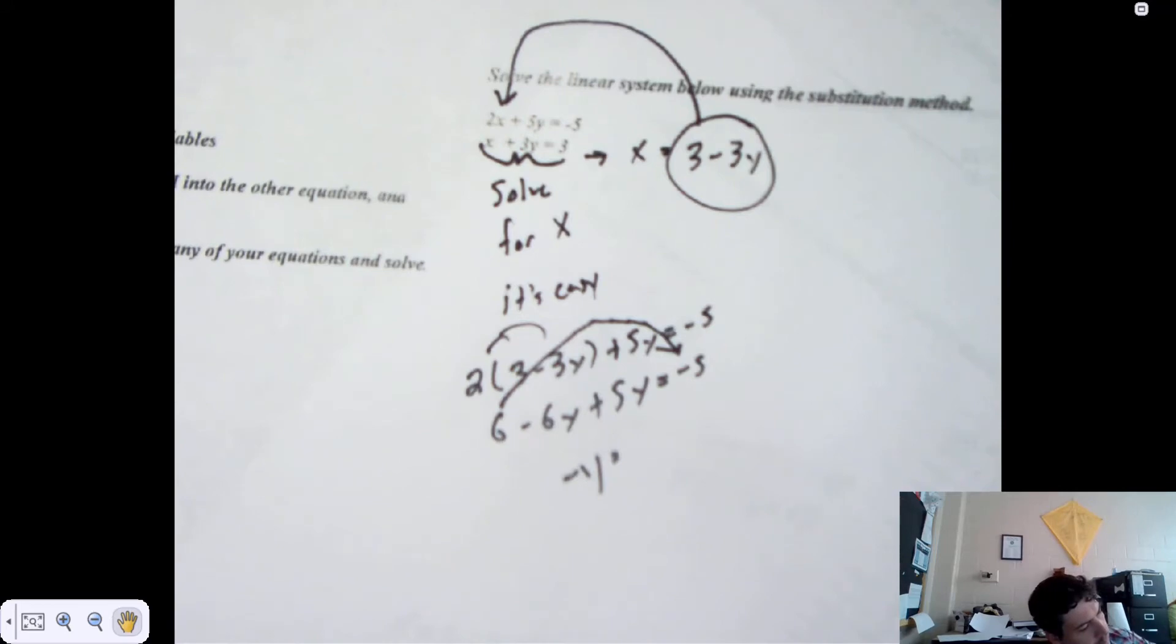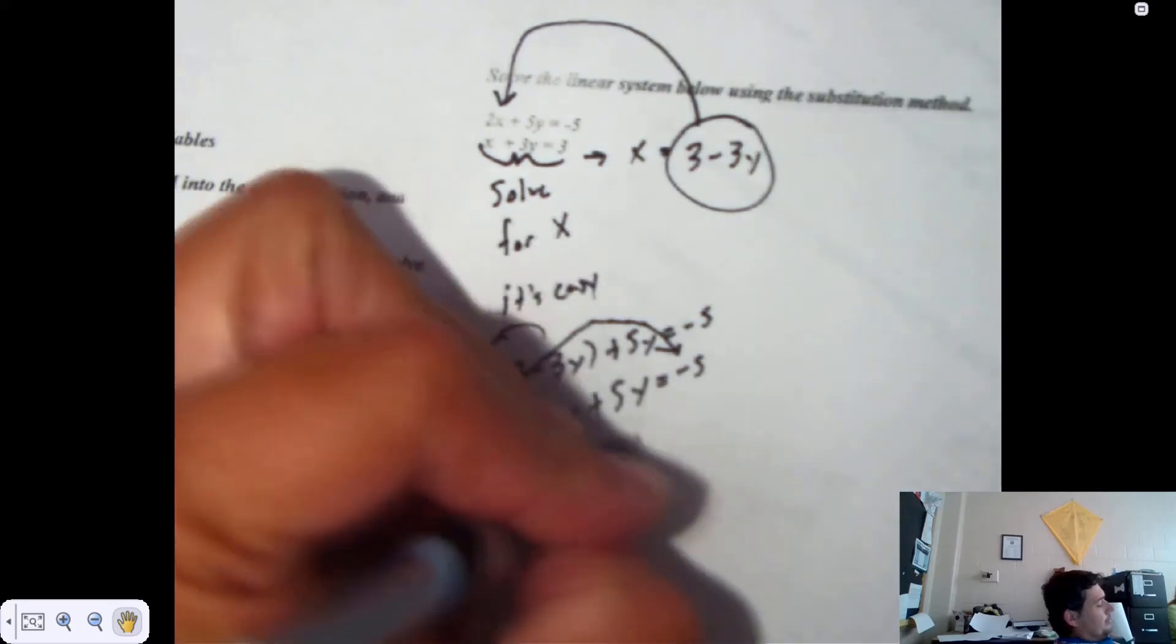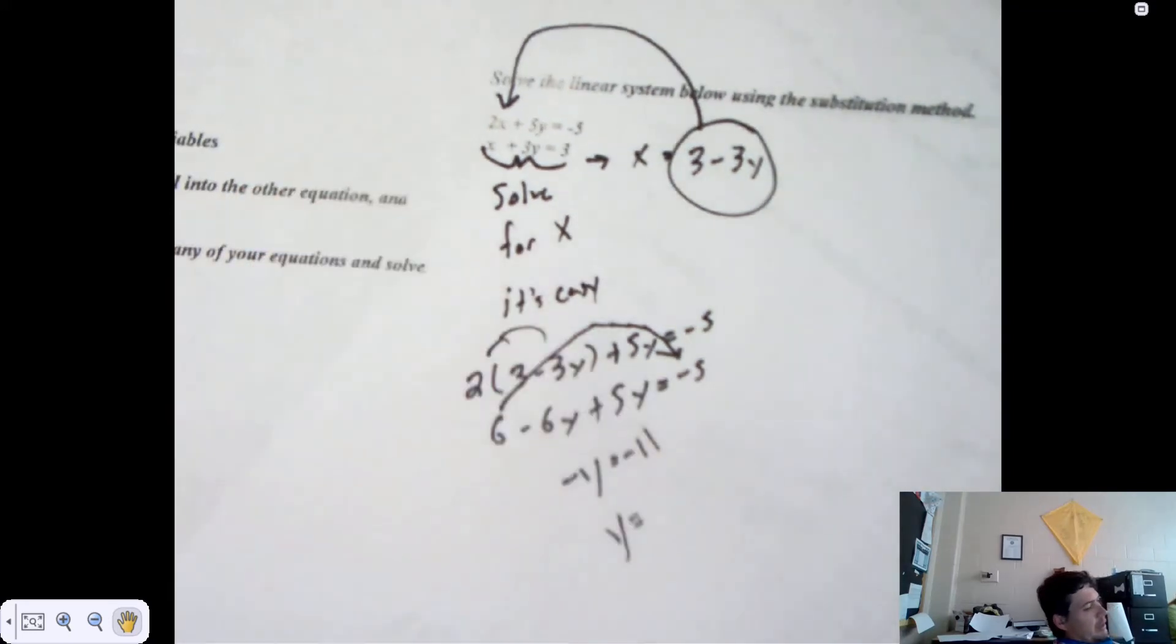I believe that positive 6 should be moved over. What happens when you move a term? What happens to your sign? If you move a positive 6 to the right-hand side, it turns into negative 6. So Grant, what was negative 5 minus 6? Negative 11. If negative Y equals negative 11, what's our actual positive Y value? 11.